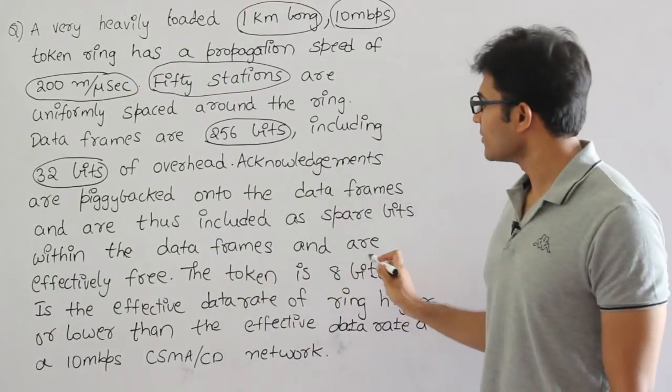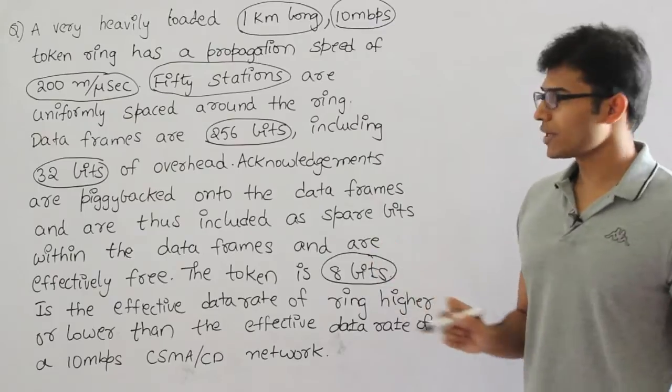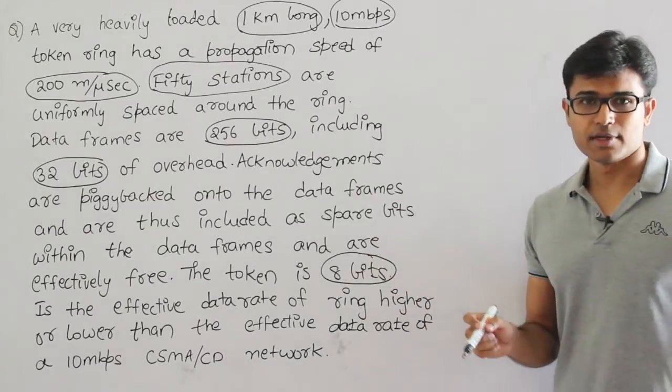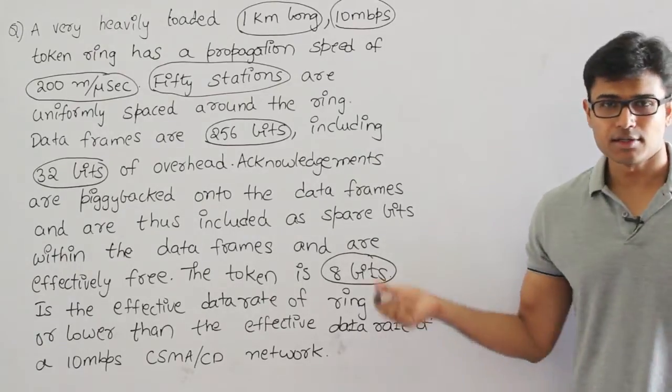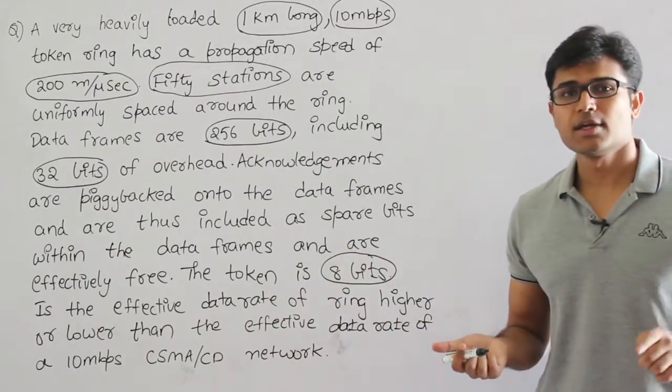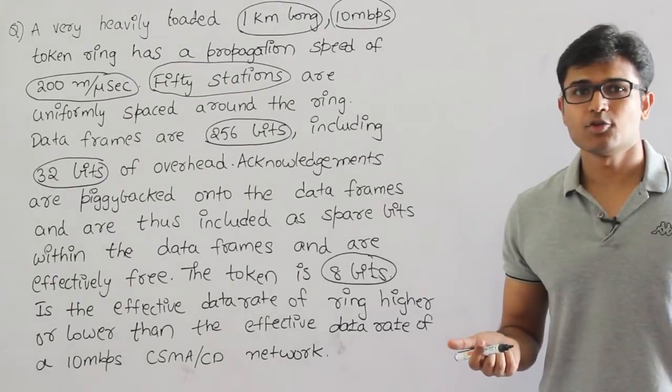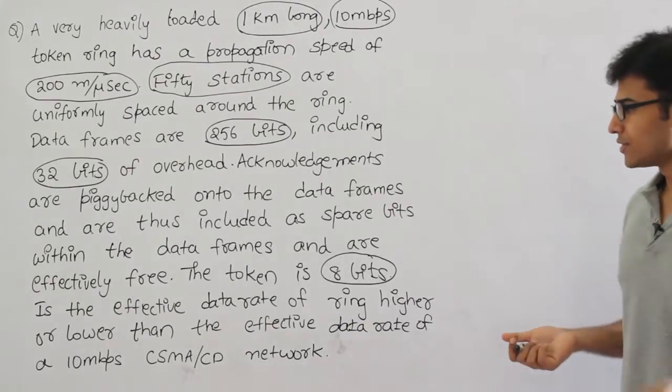The token is 8 bits. The token frame which is used is 8 bits, but the standard token is 24 bits. This is implementation dependent. In this implementation they are using a token of 8 bits, but remember that in our standard Token Ring it is 24 bits, which is 3 bytes.